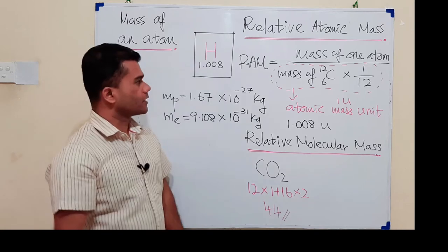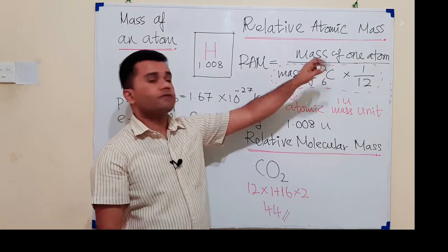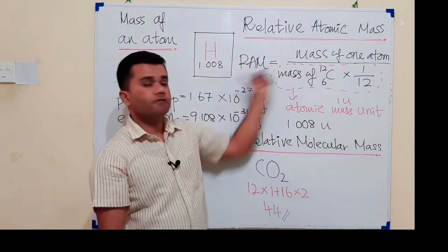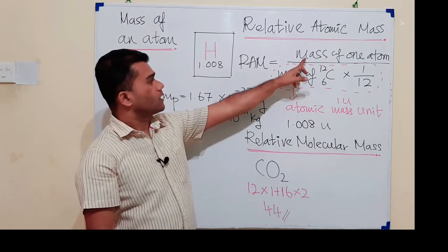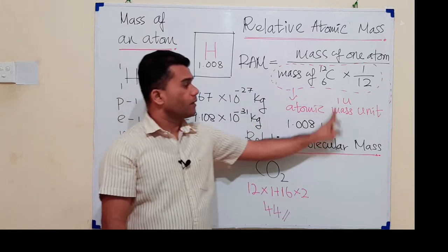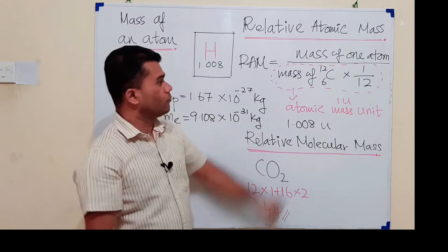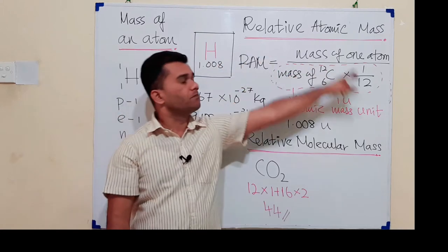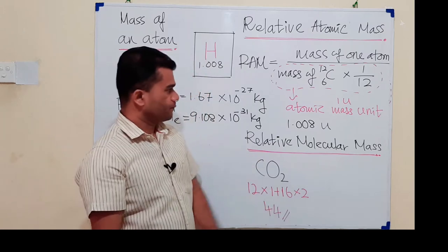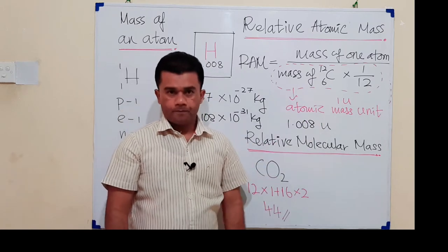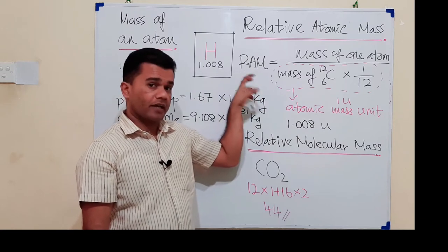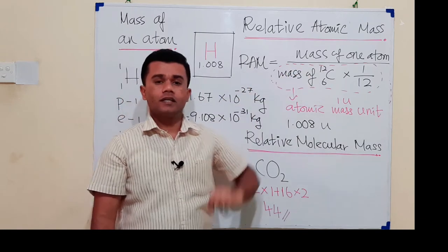If you need the actual mass of one atom, you multiply the relative atomic mass by the atomic mass unit. Later in this video I'll explain the value of the atomic mass unit in kilograms, so anyone can multiply that by the relative atomic mass to get the mass of one atom in kilograms.